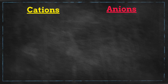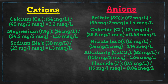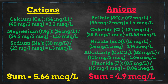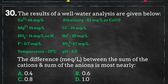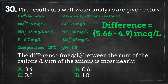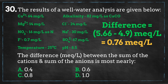We add up both categories and get a sum of 5.66 MEQ per liter for the cations and 4.9 MEQ per liter for the anions. We can now calculate the difference and get 0.76 MEQ per liter, which is closest to answer choice C.